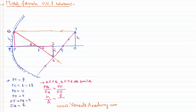Now I need to find FI. FI is nothing but equal to PI minus PF. So FI equals PI minus PF. The distance between the pole and the image is represented with v, and PF is the focal length f. Therefore FI equals v minus f. So h by h-dash equals f by (v minus f). Let me call this equation number one.